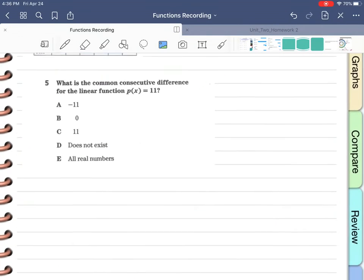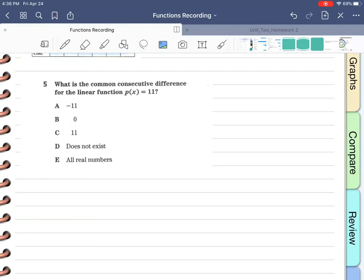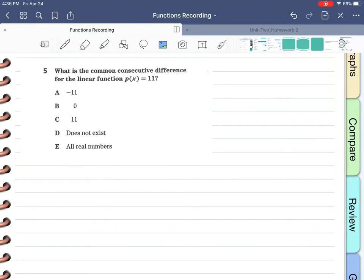Here is problem 5 and I have had a lot of questions about problem 5. I understand why, it is a very tricky problem. So let's take a look. The question is what is the common consecutive difference for the linear function p(x) = 11.